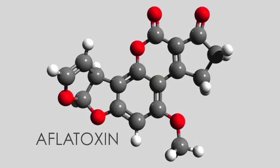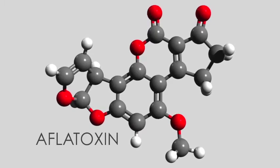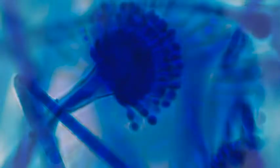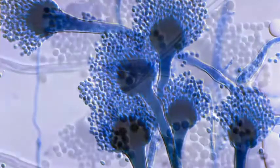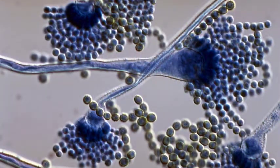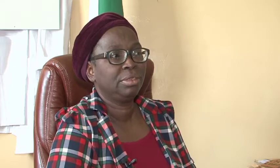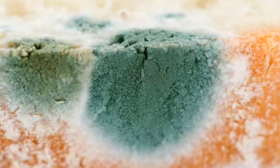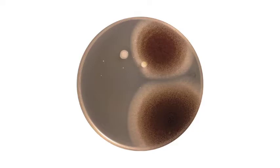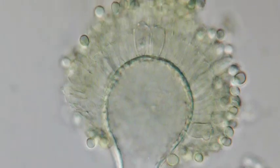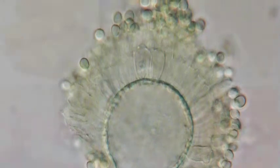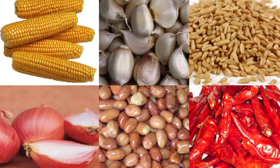Aflatoxins are poisonous chemicals produced by moulds known as Aspergillus flavus and Aspergillus parasiticus, which are abundant in warm and humid regions. Aflatoxin is part of mycotoxin — the broader classification is mycotoxin. They are toxins derived from moulds, and the moulds are mainly Aspergillus species. You have aflatoxin growing on different kinds of food crops.